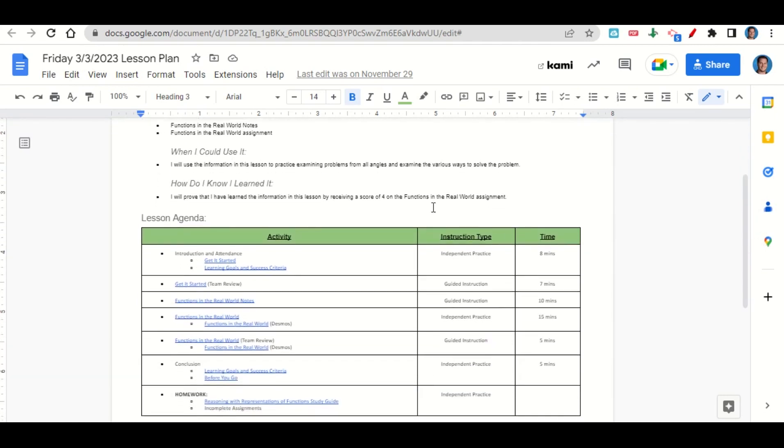Now let's take a look at our agenda for today. We will begin by going over the learning goals and success criteria. While we do that, you'll fill out your get it started. Once you've completed your get it started, we'll go over it together and answer any questions that you may have.